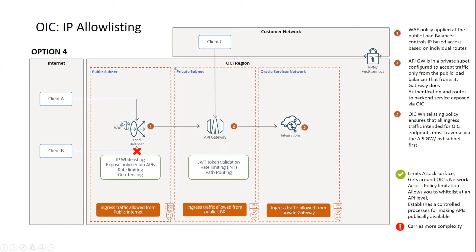This brings us to the final option, which is a combination of both. In my opinion, this is probably the most flexible architecture. We have a load balancer sitting in a public subnet, with a WAF policy attached to that load balancer. That WAF policy is now responsible for handling the IP whitelisting requirement instead of the network security groups or security list. This adds a distinct advantage — because we're doing this through a WAF policy, we can now do it at a path level, specifying a range of IPs that can access a specific API.